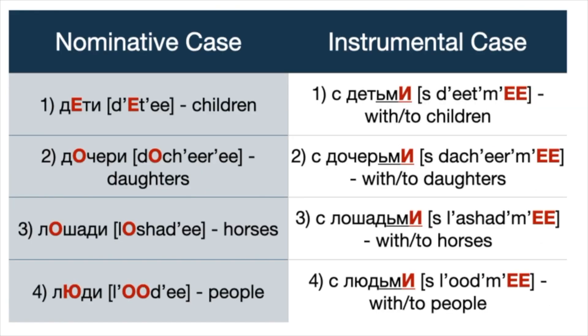There are some exceptions to the rule that you have to remember. Number one: дети — children → детьми. Number two: дочери — daughters → дочерьми. Number three: лошади — horses → лошадьми. Number four: люди — people → людьми.